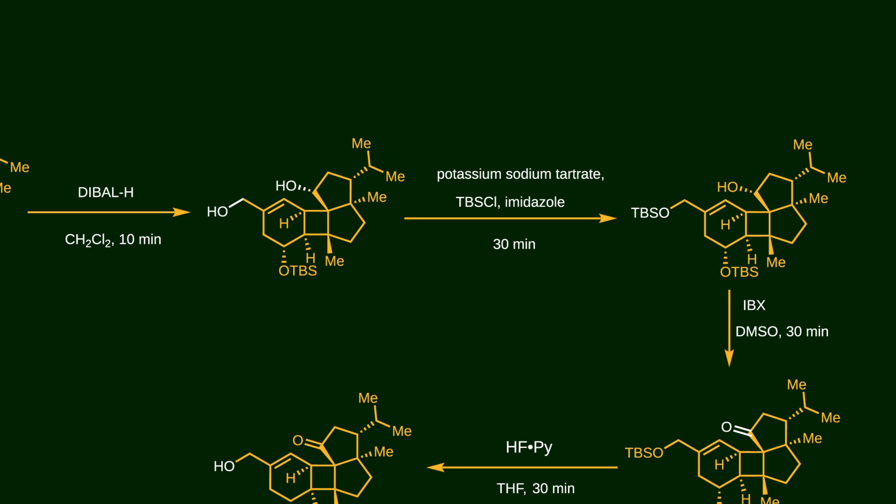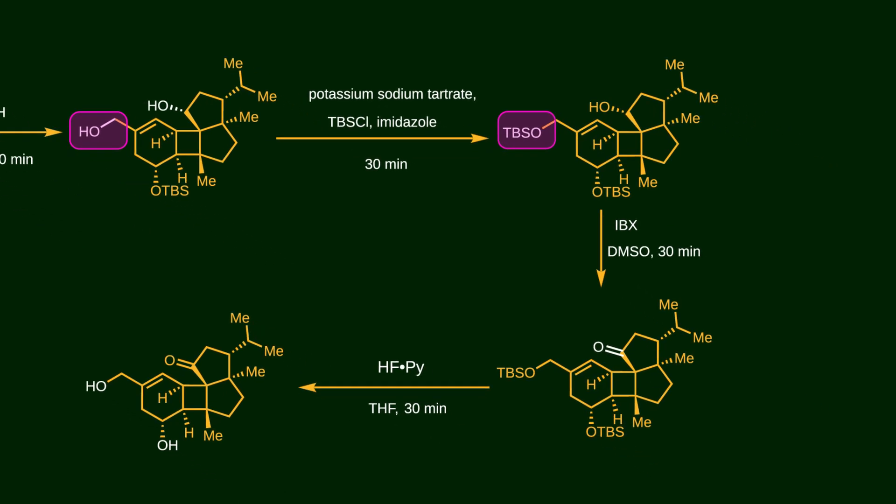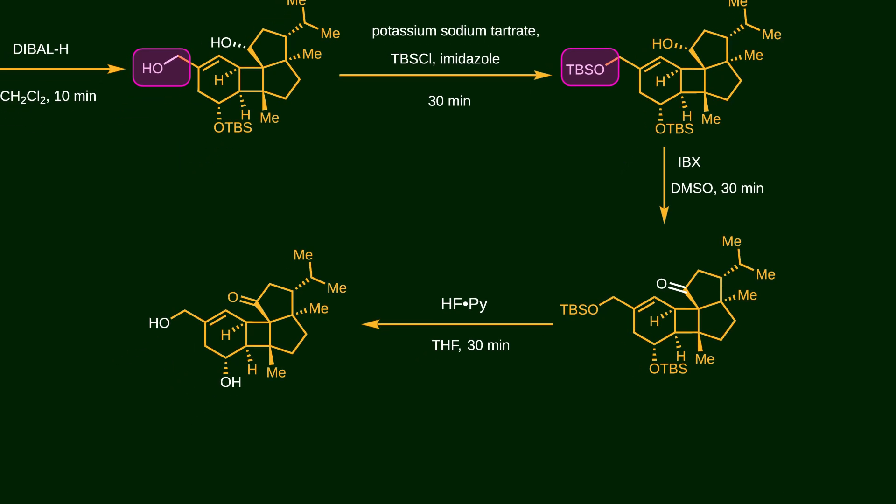In the next step, the ester group and acetate are reduced by DIBAL, and then the resulting primary alcohol is selectively protected by TBS. Next, the secondary alcohol is oxidized by IBX. Eventually, the target molecule is formed after deprotection with hydrogen fluoride.